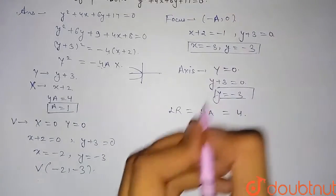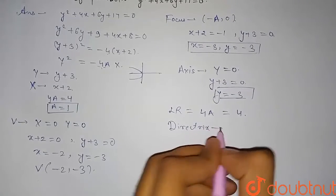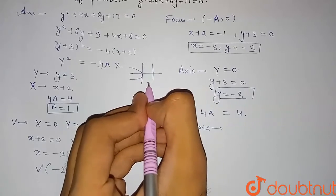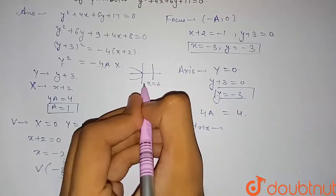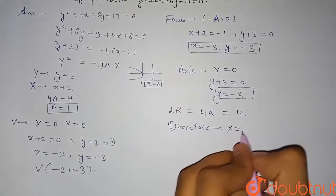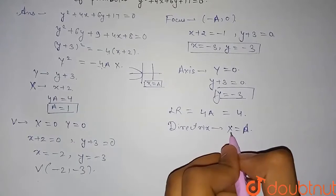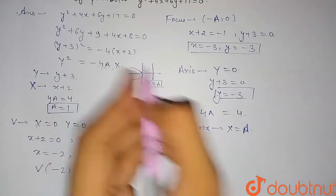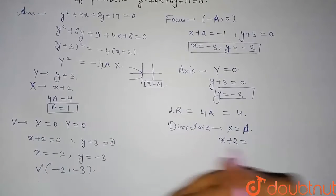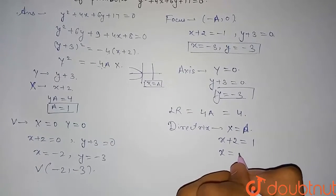For the directrix: the directrix of the general parabola y² = −4ax is x = a. For our parabola, replacing x with (x + 2), we get x + 2 = a = 1, so x = −1. Therefore, the directrix of the parabola is x = −1.